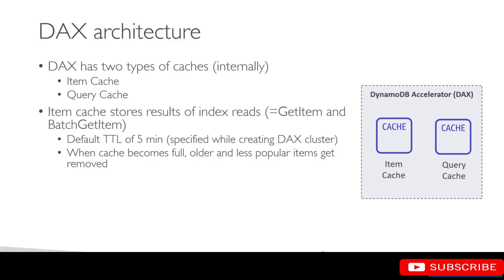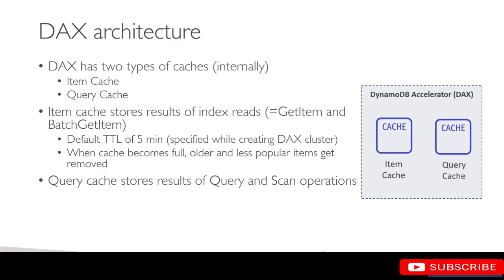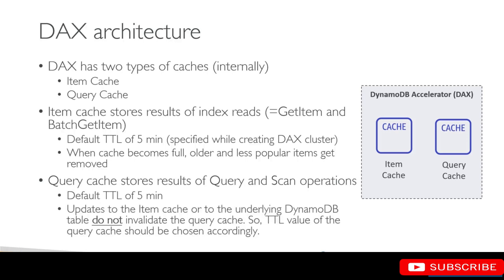You can adjust the TTL as per your needs, but this is the amount of time any item lives in the DAX cache. The second cache is the query cache, and as the name suggests, it stores the results of your query and scan operations. The default TTL here as well is about five minutes. Importantly, any updates you make to the item cache or to the underlying DynamoDB table do not invalidate the query cache — the item cache and query cache are independent of each other.